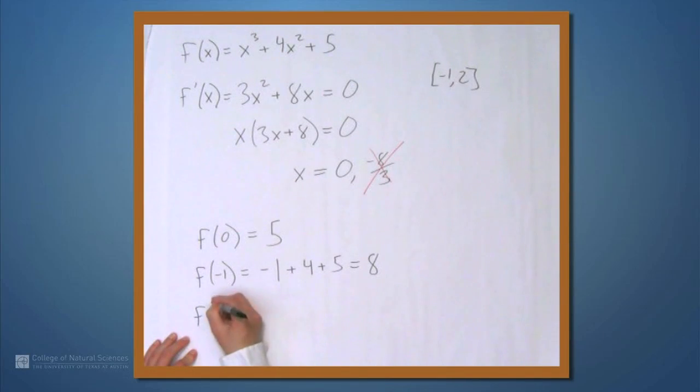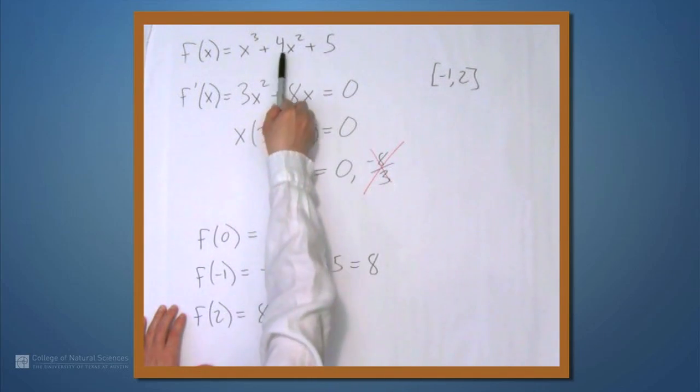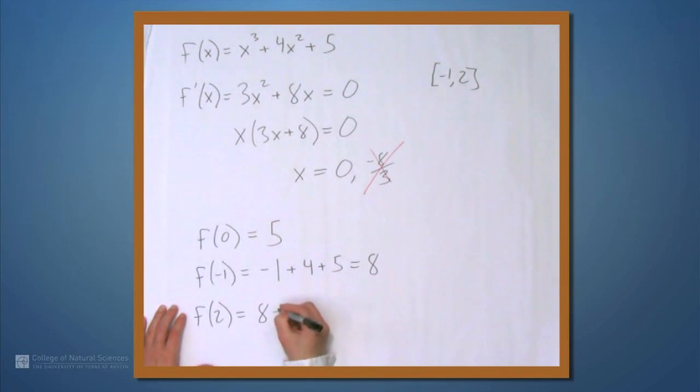And then f of 2 is 2 cubed, which is 8, plus 4 times 4, which is 16, plus 5, and this is 29.